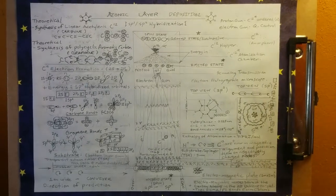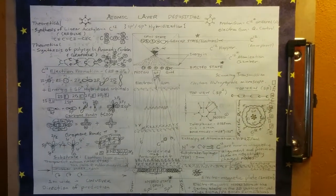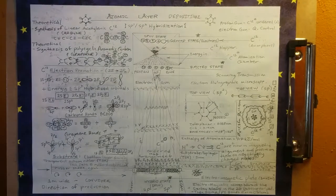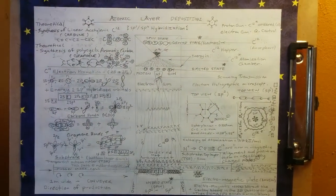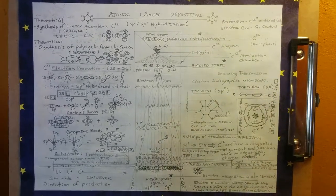Theoretical synthesis of linear acetylenic carbon through sp1 hybridization, carbyne, and theoretical synthesis of polycyclic aromatic carbon through sp2 hybridization, graphene.